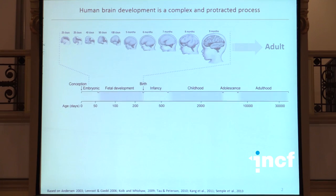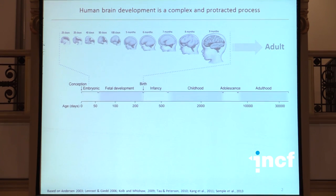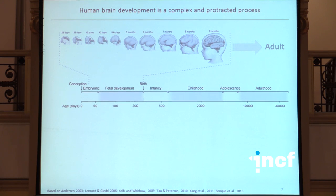There are basically four problems one faces when wanting to study human brain development. The first couple of problems are really related to the nature of human brain as biological tissue. The first one is that it's complex — many of my colleagues showed you examples of how that complexity manifests in development. The second one, which I really would like to emphasize, is that it's a very protracted process.